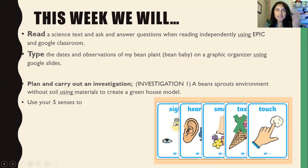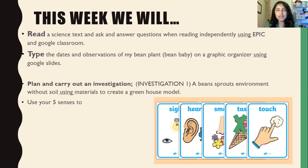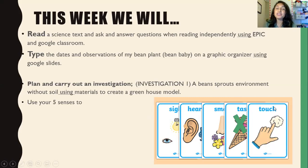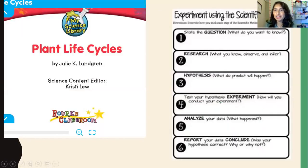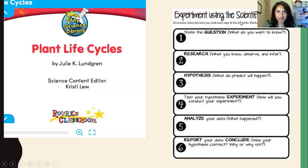You're going to use your eyes — what do you notice, what do you see? You can maybe even rattle your bottles and see if they sound the same. You can smell them. I don't want you to taste them — I'll tell you later why we shouldn't taste them, and it's an investigation so we should probably never do that. And you can touch them, too. This week you're going to read Plant Life Cycles on Epic by Julie Kay Lundgren, and while you read and carry out this investigation, I want you to use a scientific method.